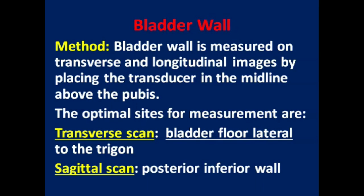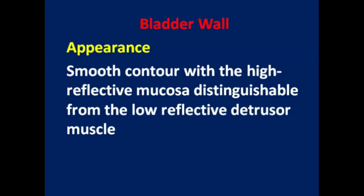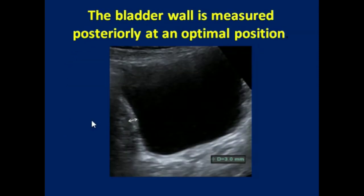By placing the transducer in the midline above the pubis, the optimal sites for measurements are the transverse scan of the bladder floor lateral to the trigone, and the sagittal scan of the posterior inferior wall. The smooth contour with high reflective mucosa is distinguishable from the low reflective detrusor muscle.